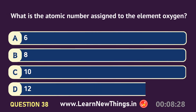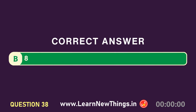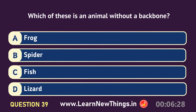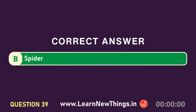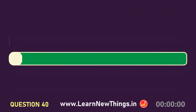What is the atomic number assigned to the element oxygen? Eight. Which of these is an animal without a backbone? Spider. Which vitamin is popularly known as the sunshine vitamin due to its synthesis through sunlight exposure? Vitamin D.